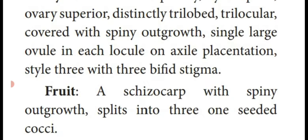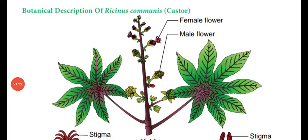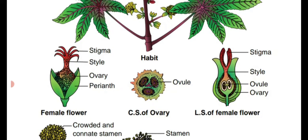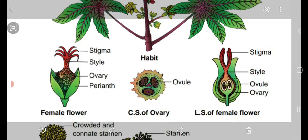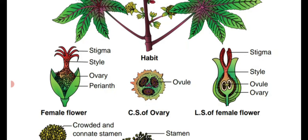Fruit: a schizocarp with spiny outgrowth, split into three one-seeded cocci. See the diagram — at the apical, female inflorescence, the female flower is present. Tepal is three — free, not joined together. At the center they have the ovary, and a style with a number of branches. Each style contains three stigmas, each stigma divided into two — so a six-branched appearance is there, but totally it is three. See the cross-section of ovary: the outer layer has a tawny or spiny appearance; inner side shows tricarpellary — three carpels and three locules; each locule has only one ovule.